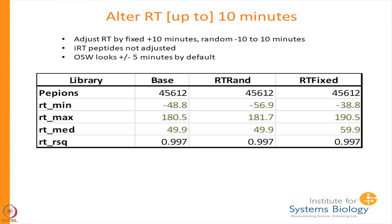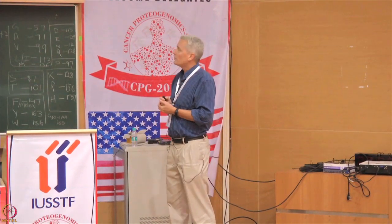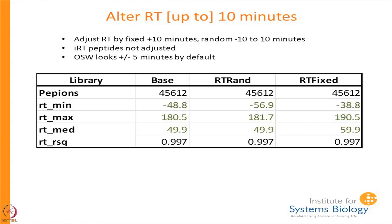In the second case, I did a fixed RT shift — I added 10 minutes to every peptide in the library and then used this library for a SWATH analysis to see how the software handles it. Between these two approaches: the baseline library, the random perturbation where each individual change averages around 5 minutes but is plus or minus, and the fixed case where everything is moved by 10 minutes — which do you think gave the worst results?